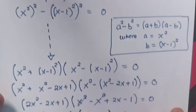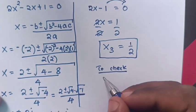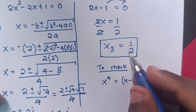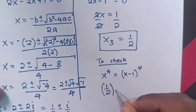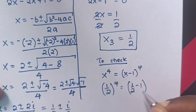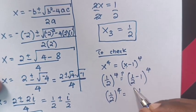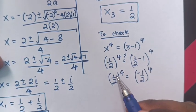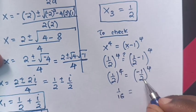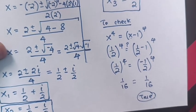Now to check if our answer is correct. From our question, x power 4 equals x minus 1 bracket power 4. Let's try x equals one half. So one half bracket power 4 equals one half minus 1 bracket power 4, which is negative one half bracket power 4. One half to the power 4 is 1 over 16, and negative one half to the power 4 is positive 1 over 16. Left hand side and right hand side are equal, so it's true.